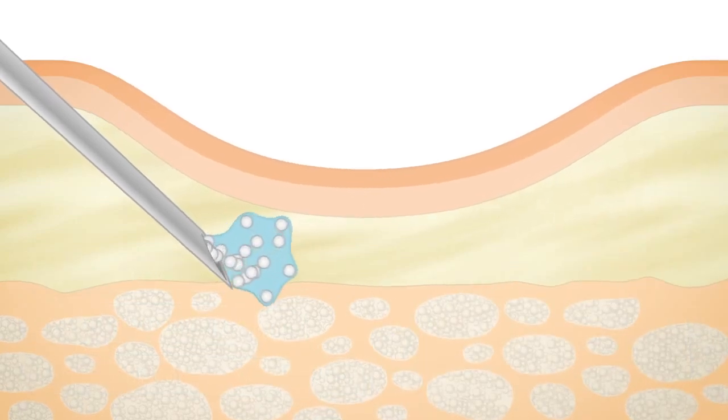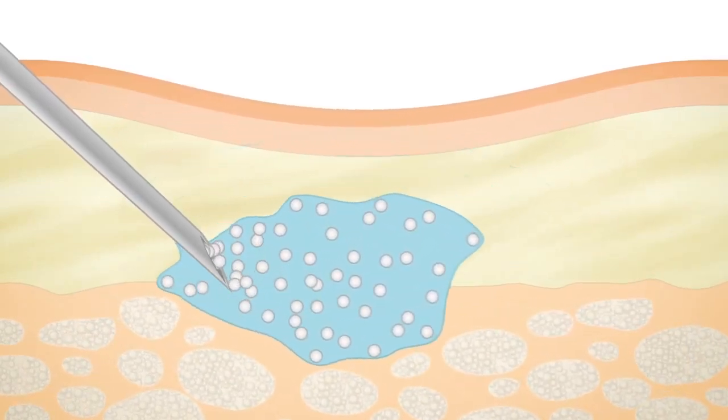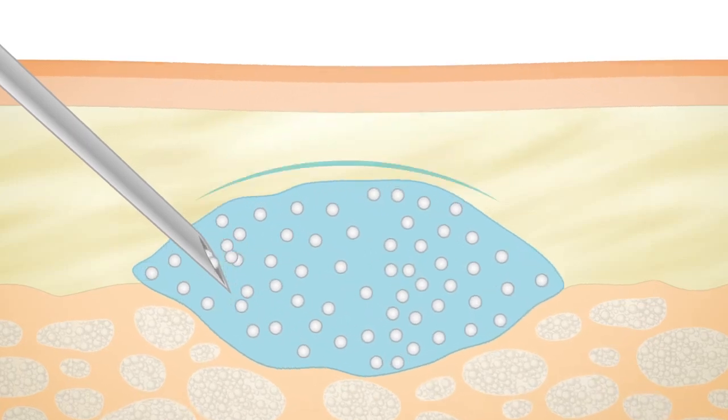The gel is injected directly into the deep dermis, where it shows an immediate filling effect and corrects the localized loss of volume.